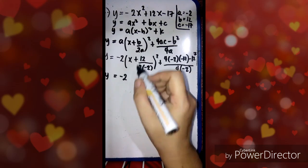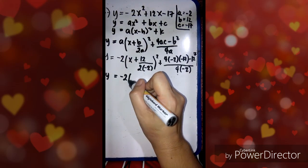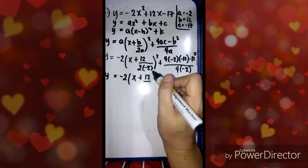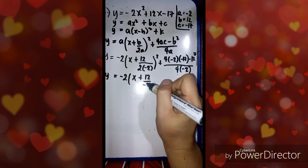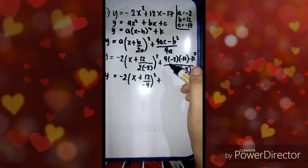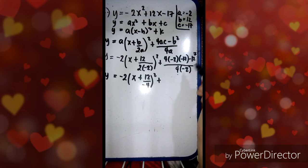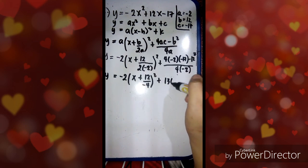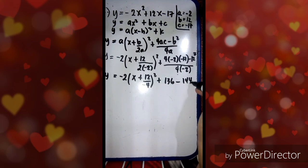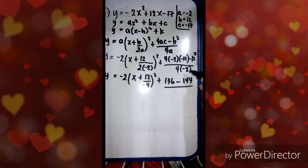We're going to simplify. Y equals negative 2 times x plus 12, and 2 times negative 2 is negative 4, squared, plus 4 times 2 is 8, times negative 17 is positive 136 — because negative multiplied by negative is positive — then minus 12 squared which is 144, and 4 times negative 2 is negative 8.